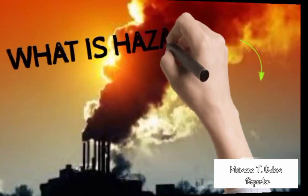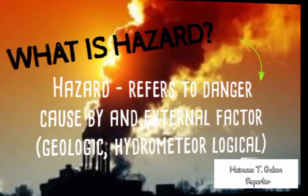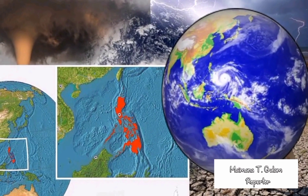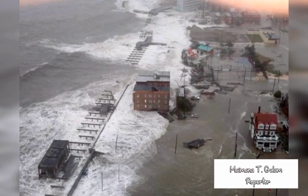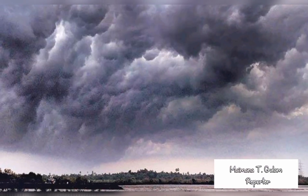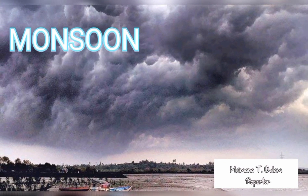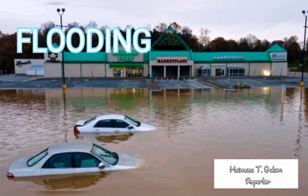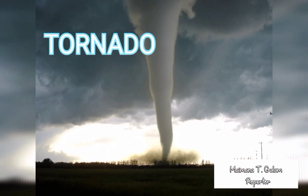What is a hazard? A hazard refers to danger caused by external factors — geologic and hydrological. Using hazard maps, we can identify areas prone to hazard brought about by cyclones, monsoon, flooding, and tornado.